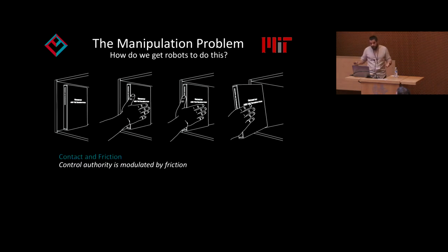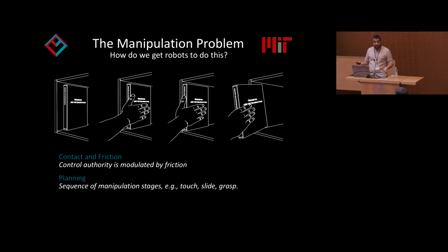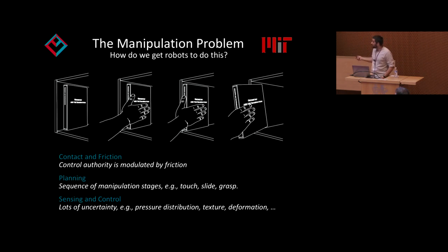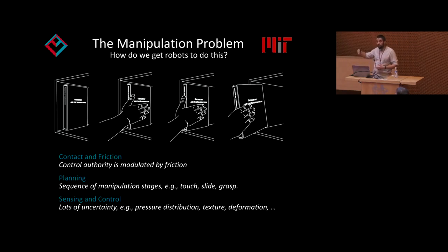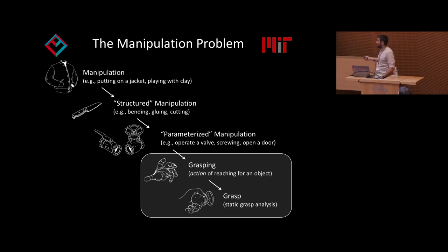To do that we need contact and friction. Control authority is modulated by friction in manipulation. Inevitably, for dexterous actions like this you need to reason about friction. You also need a layer of planning — you can't do this without sequencing different manipulation stages: touching, sliding, then grasping. Finally you need sensing and control, because these actions are quite noisy. We don't have a good model for the pressure distribution between the hand and the book, so whatever models we have will be poor — just good enough so that you can control, replan, and execute reliably.